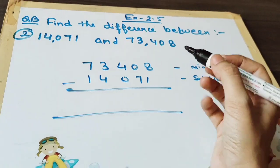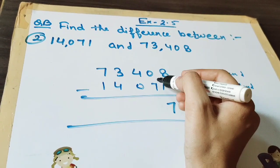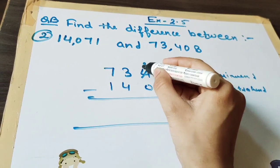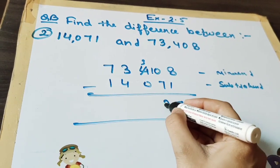Now subtract. 8 minus 1 is 7. So now it is not possible. We will borrow.